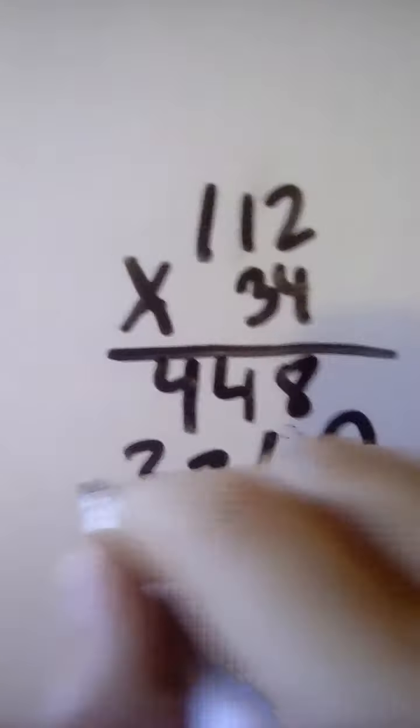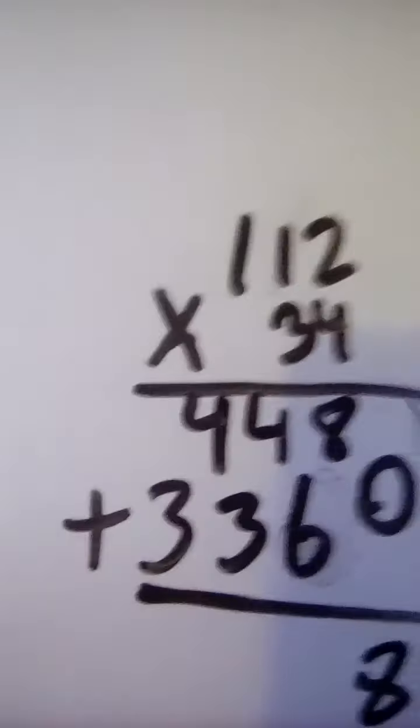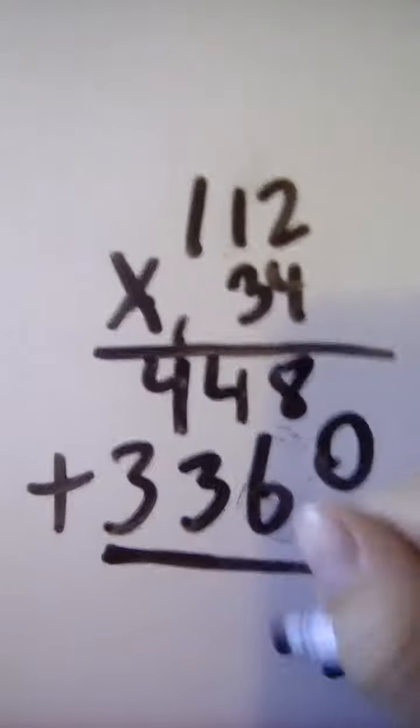Zero. Zero plus 8 equals 8. 6 plus 4 equals 10. Put the 1 up here and put the 0 down here.